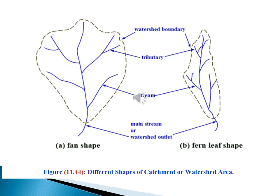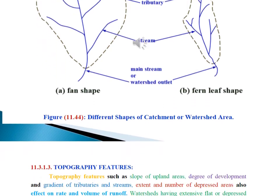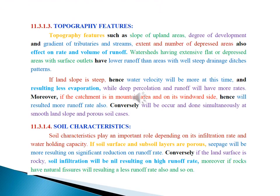Figures showing different shapes of catchment or watershed area. It is so easy as explained before. Topography features such as slope of upland area, degree of development, and gradient of tributaries and streams extend. A number of depressed areas also affect the rate and volume of runoff. Moreover, soil characteristics play also an important role depending on its post-infiltration rate and water-holding capacity.